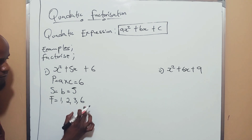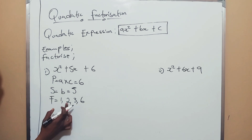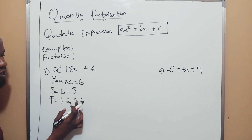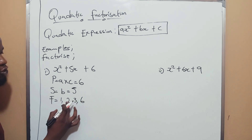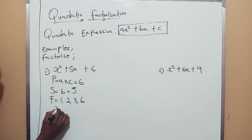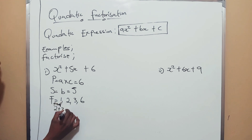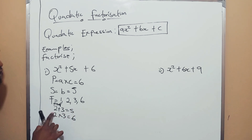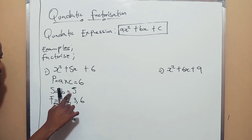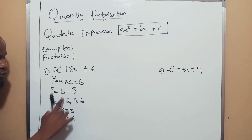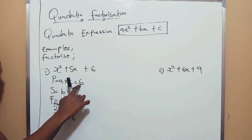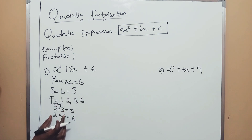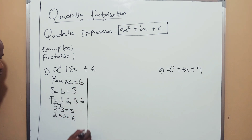Between all these factors, I see 2 and 3. Proof: 2 plus 3 gives us 5, and 2 times 3 gives us 6. You add or subtract them and they give you the sum. You multiply them and they give you the product. Once you have this, you have your factors.